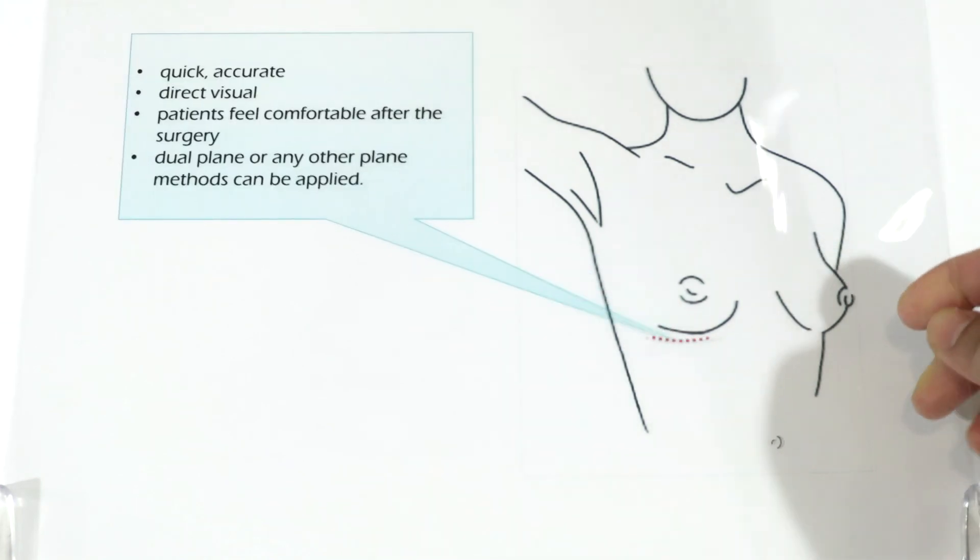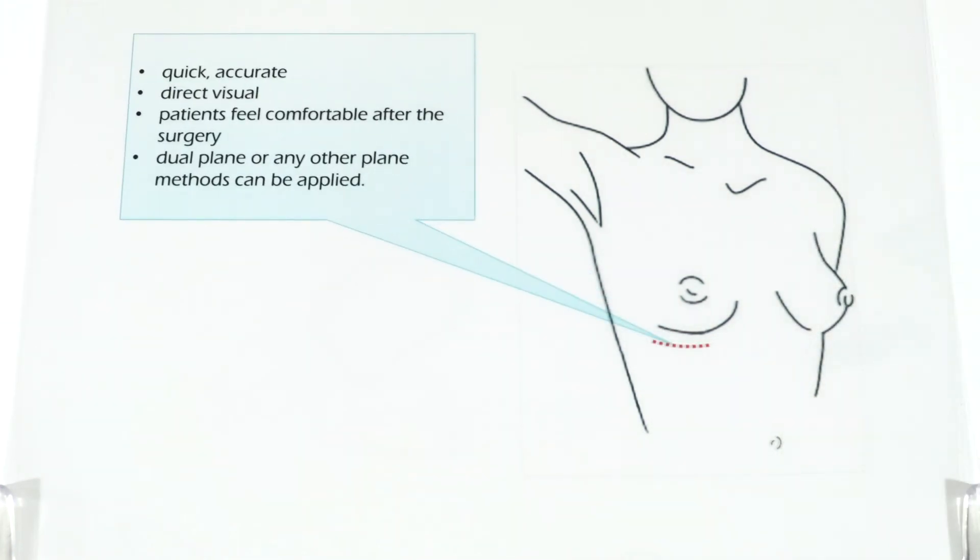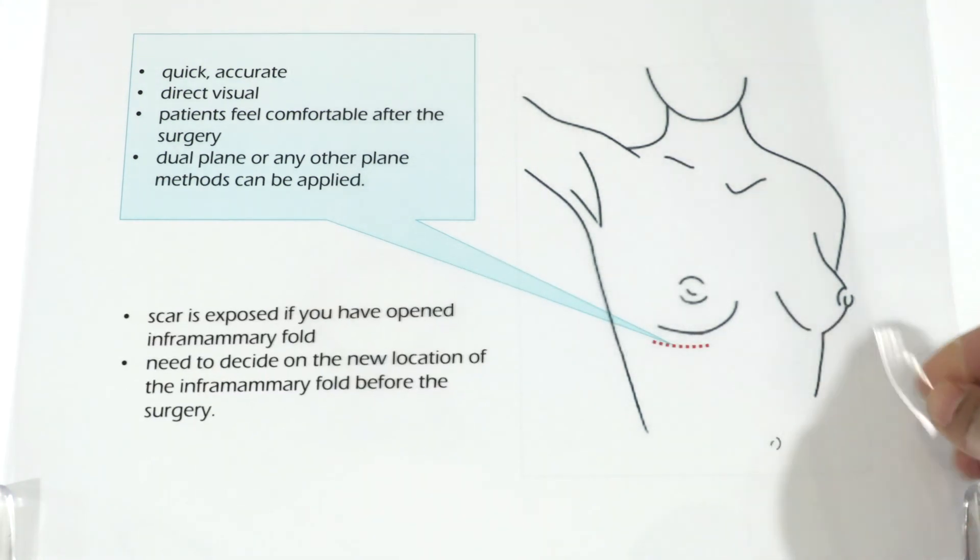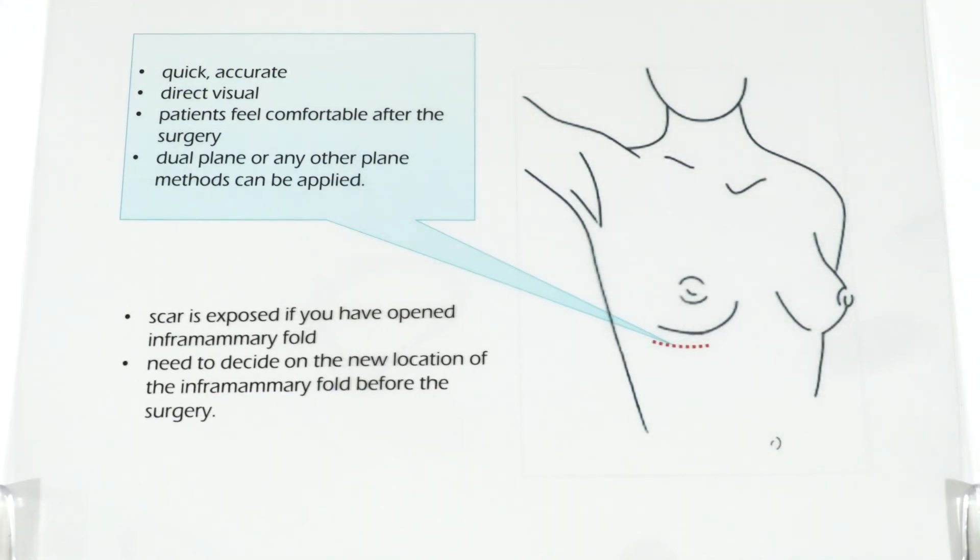Inframammary fold incision is quick, accurate, and has direct visual. The patients feel comfortable after the surgery and dual plane or any other plane methods can be applied. The disadvantage is that the scar is exposed if you have opened the inframammary fold. Also, you need to decide on the new location of the inframammary fold before the surgery.